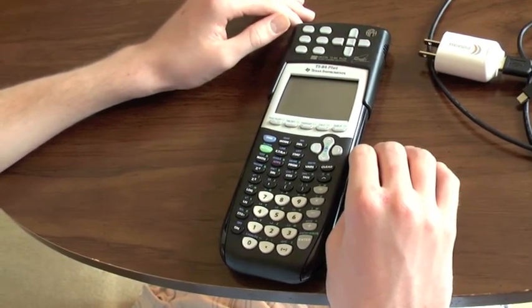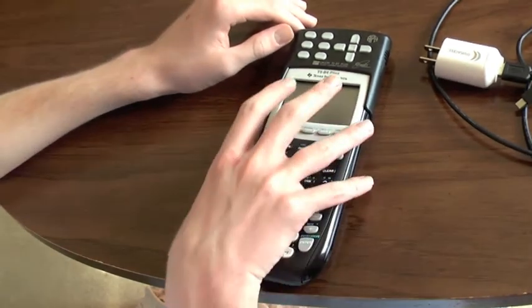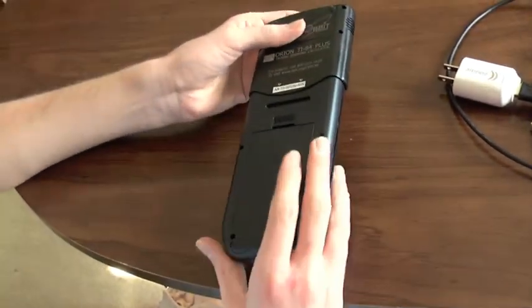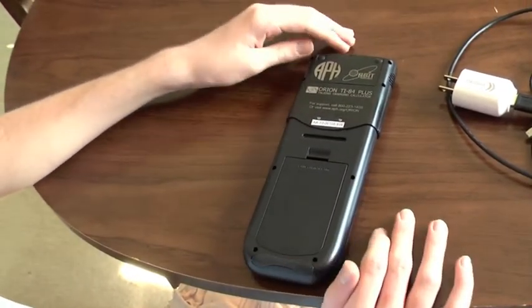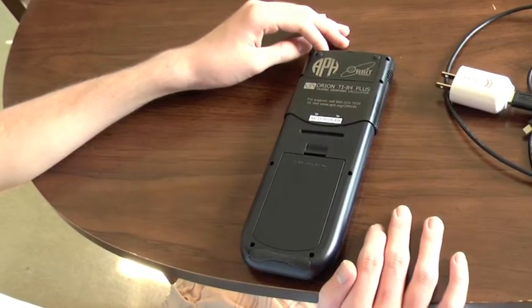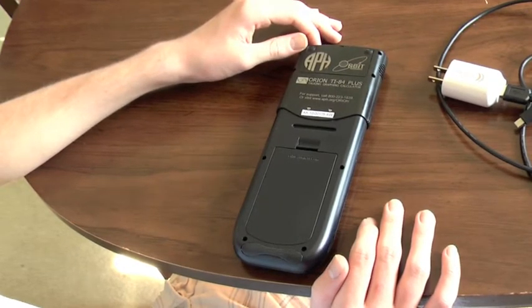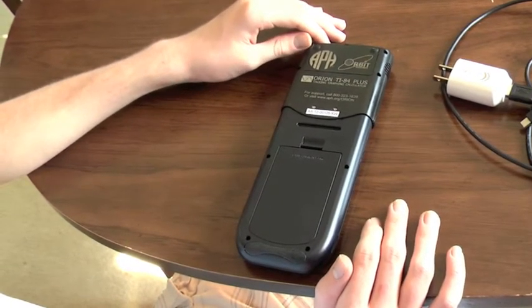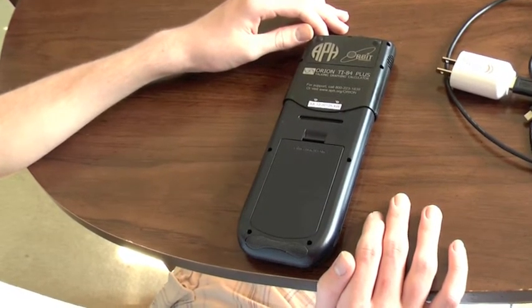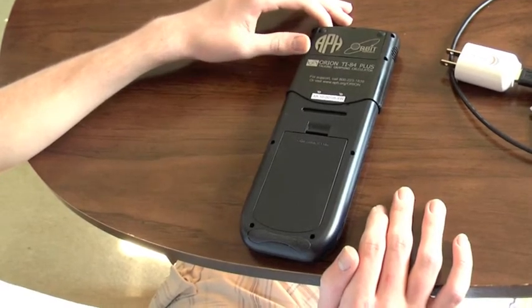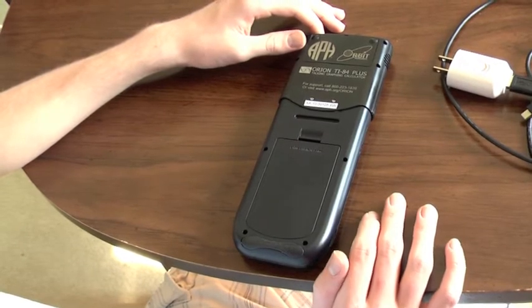When you first get your calculator you will need to put the batteries into the TI-84 Plus calculator. There are two different batteries within this device. The TI-84 Plus calculator itself runs on four AAA batteries. The Orion unit that sits on the top of the calculator, the unit that produces the speech output, has its own rechargeable battery but the calculator itself does not power the Orion unit. So you must first put your AAA batteries in the calculator and then charge the Orion unit.